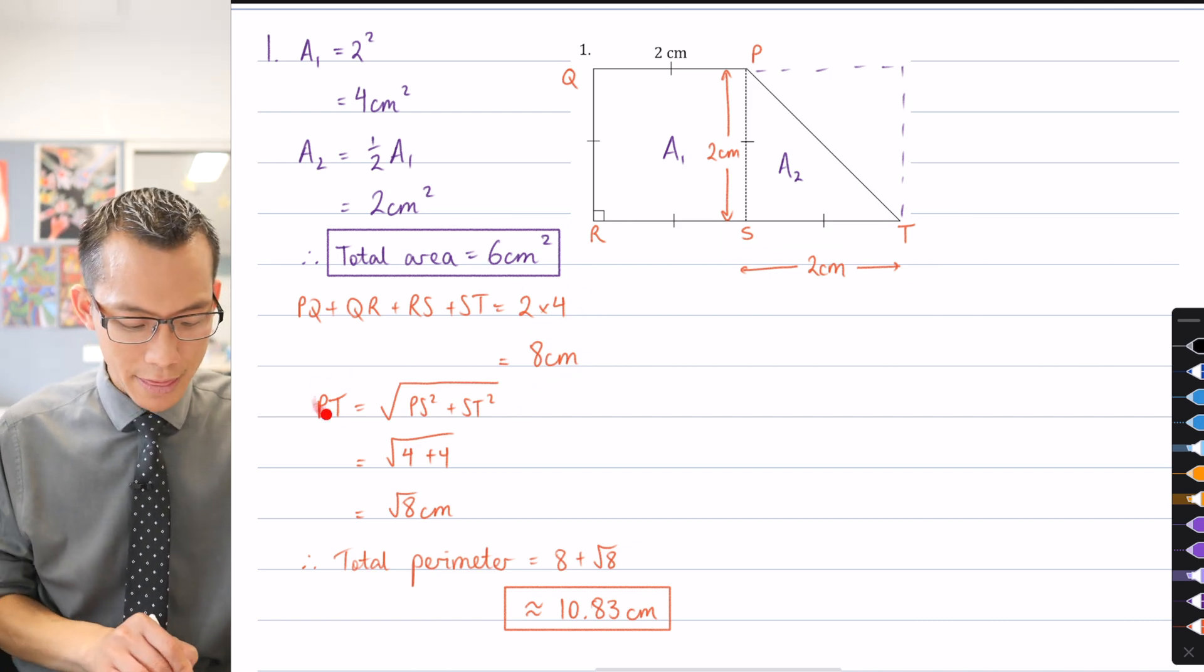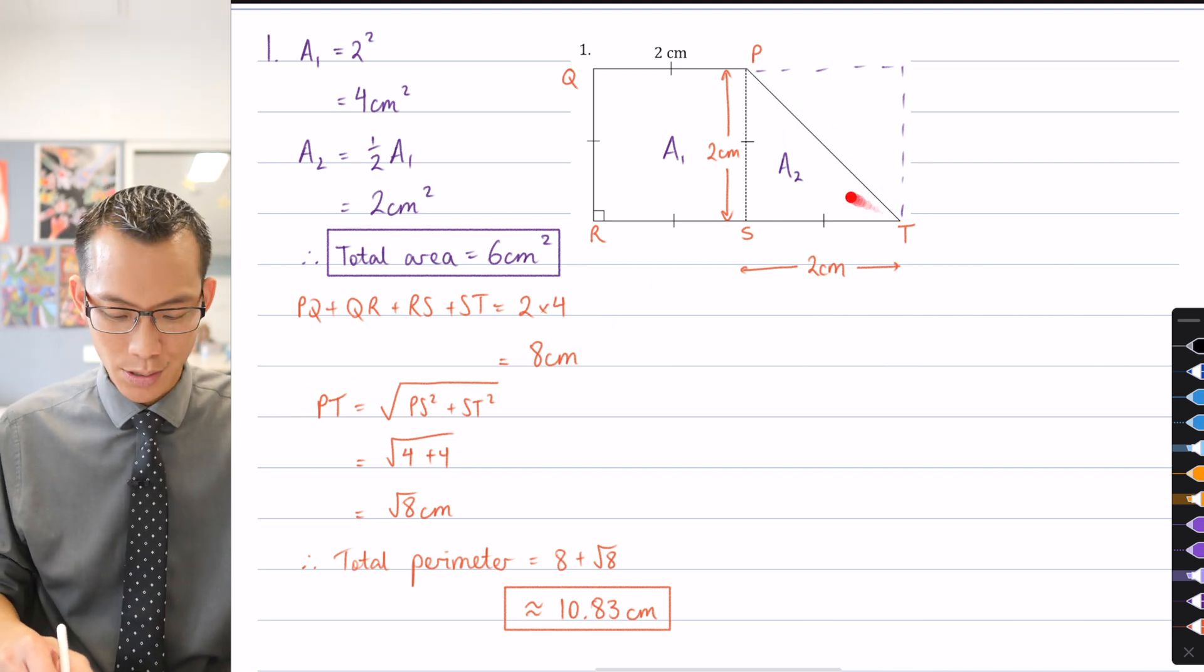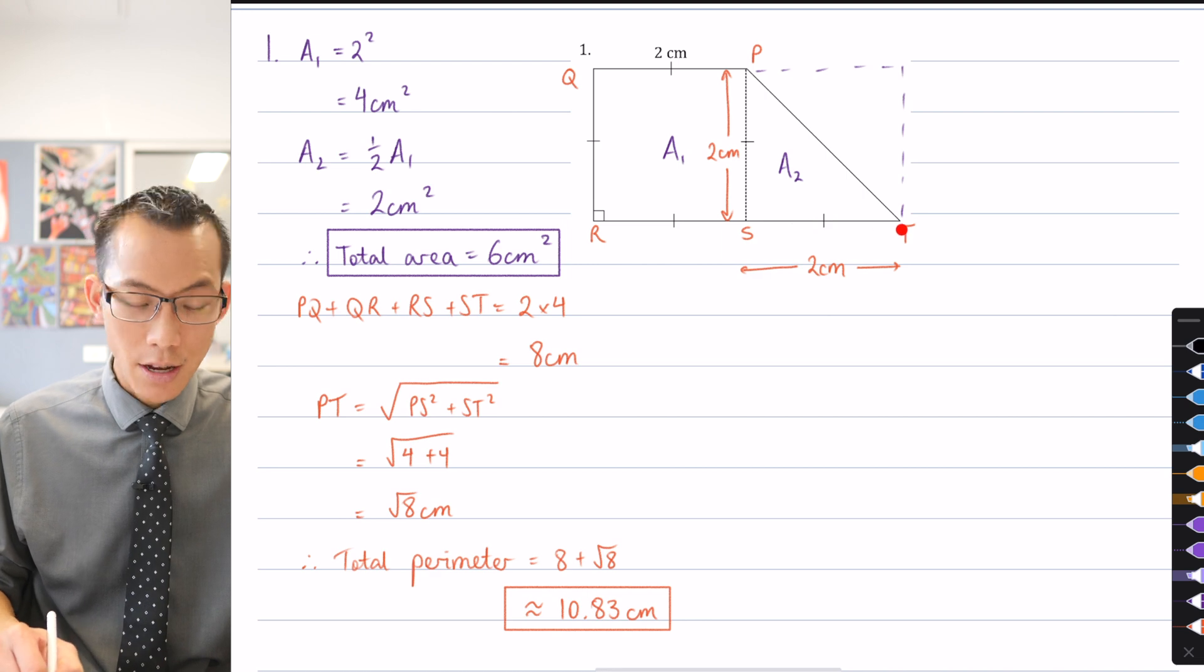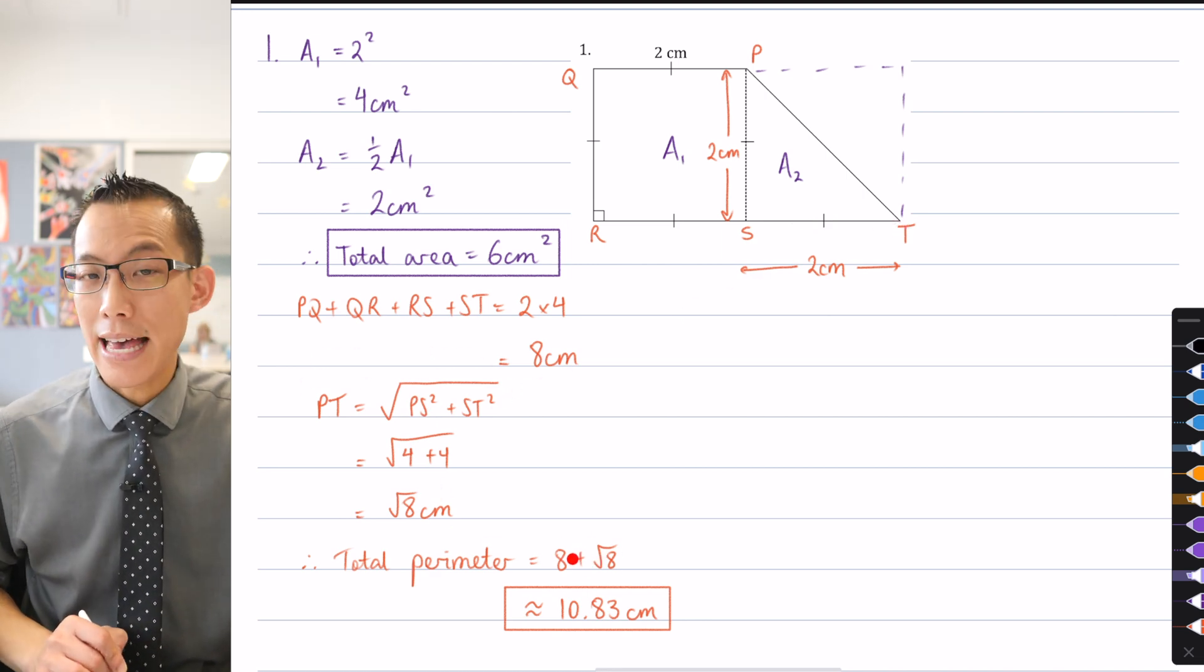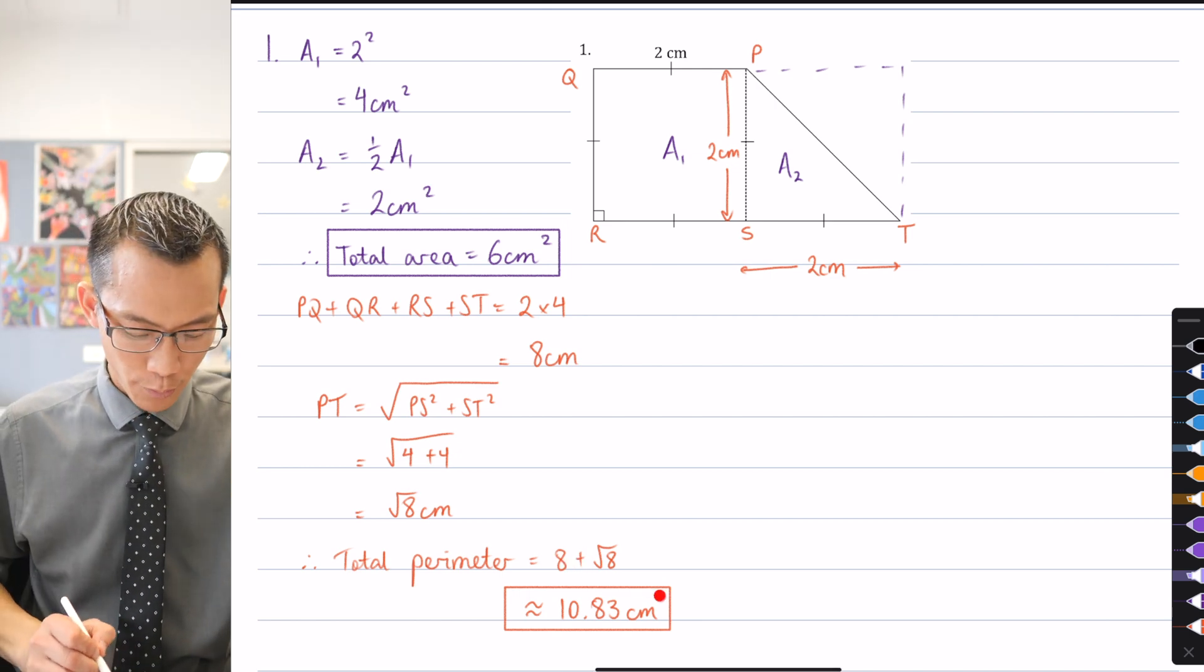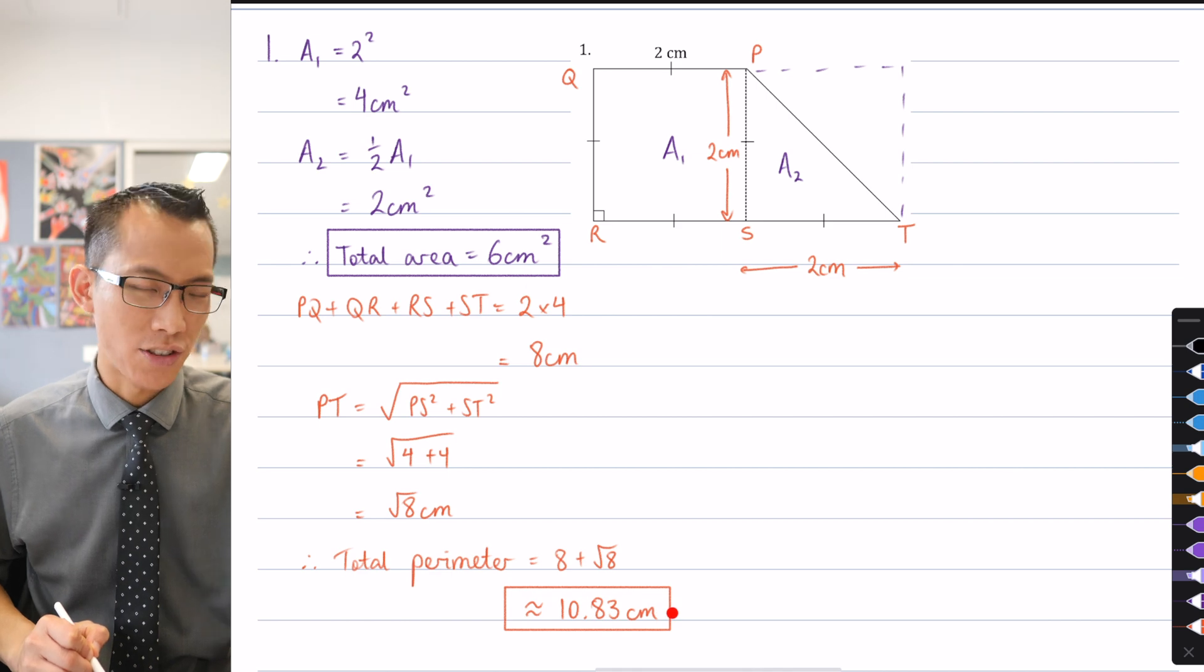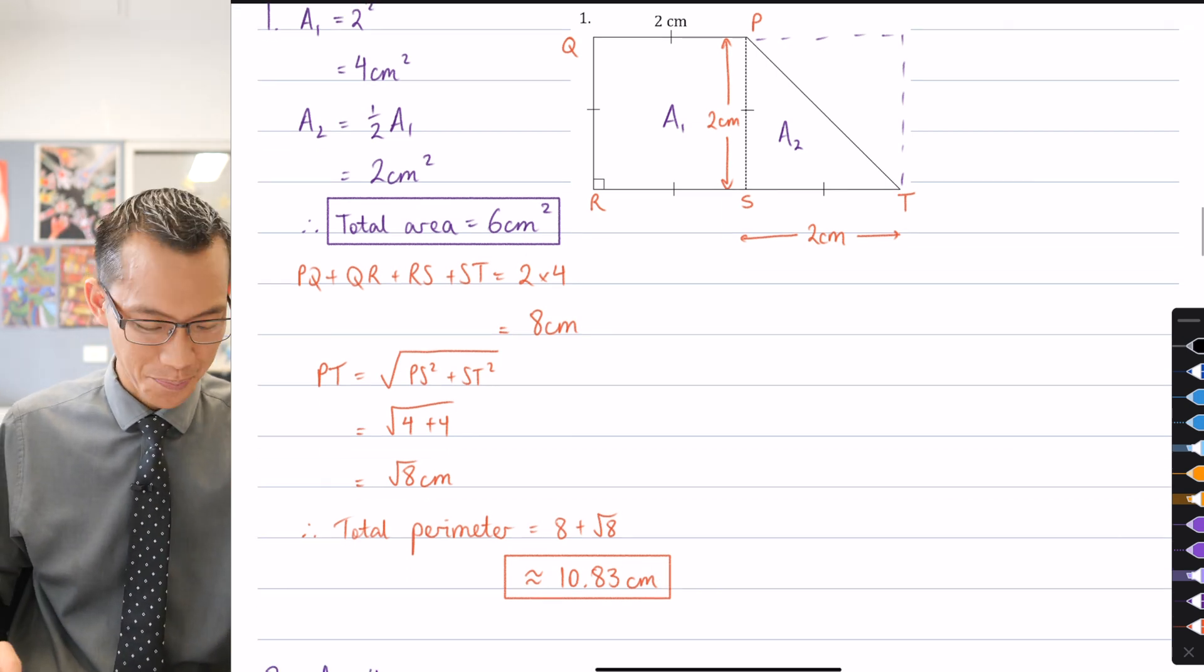And then you need to use Pythagoras. I haven't stated it here, but PT is the hypotenuse of this PST triangle. So that's where Pythagoras' theorem comes in here. That's the exact length, eight plus root eight. But so that we could do a bit of a sense check, I thought it'd be helpful to just do a bit of an approximation there. And that's just to two decimal places, 10.83 centimeters. And we're done.